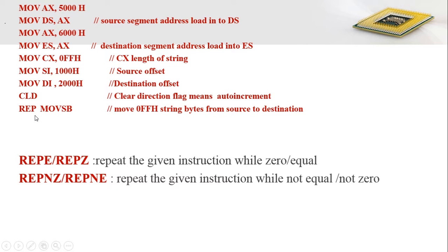REP is prefixed with MOVSB, meaning data transfer is performed from source to destination repeatedly until CX becomes 0. CX is initially set with the count value. After each execution of MOVSB, the count value CX is decremented by 1 and the repeat ends when CX becomes 0.